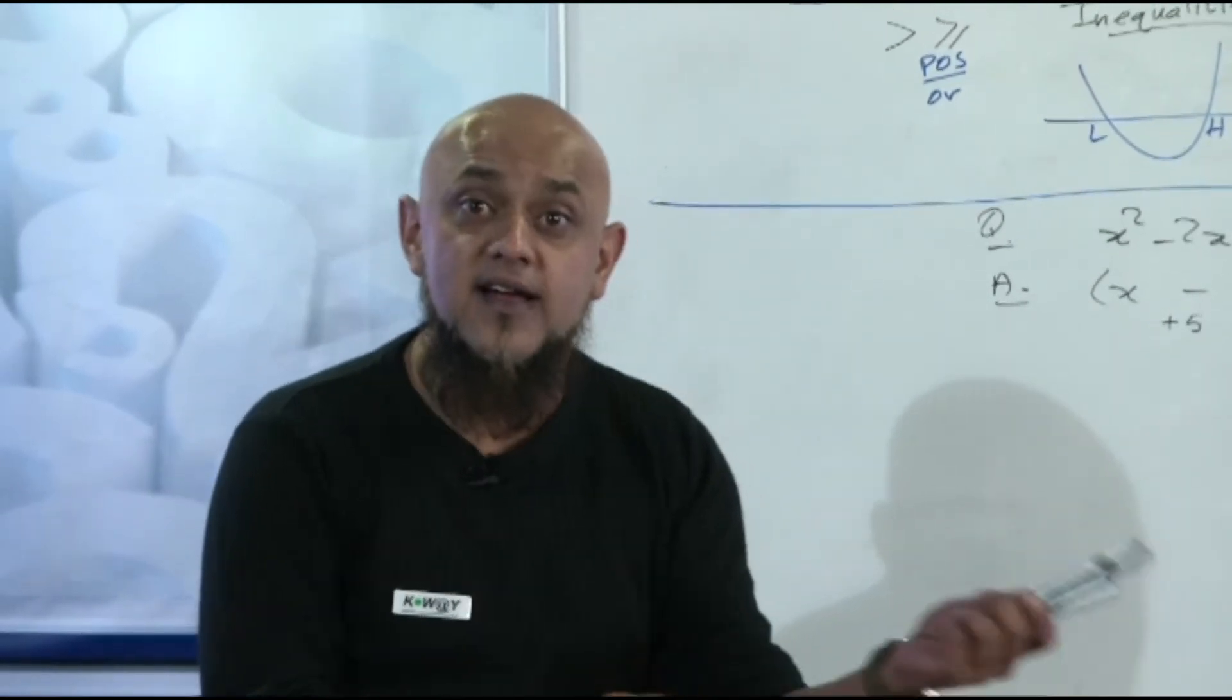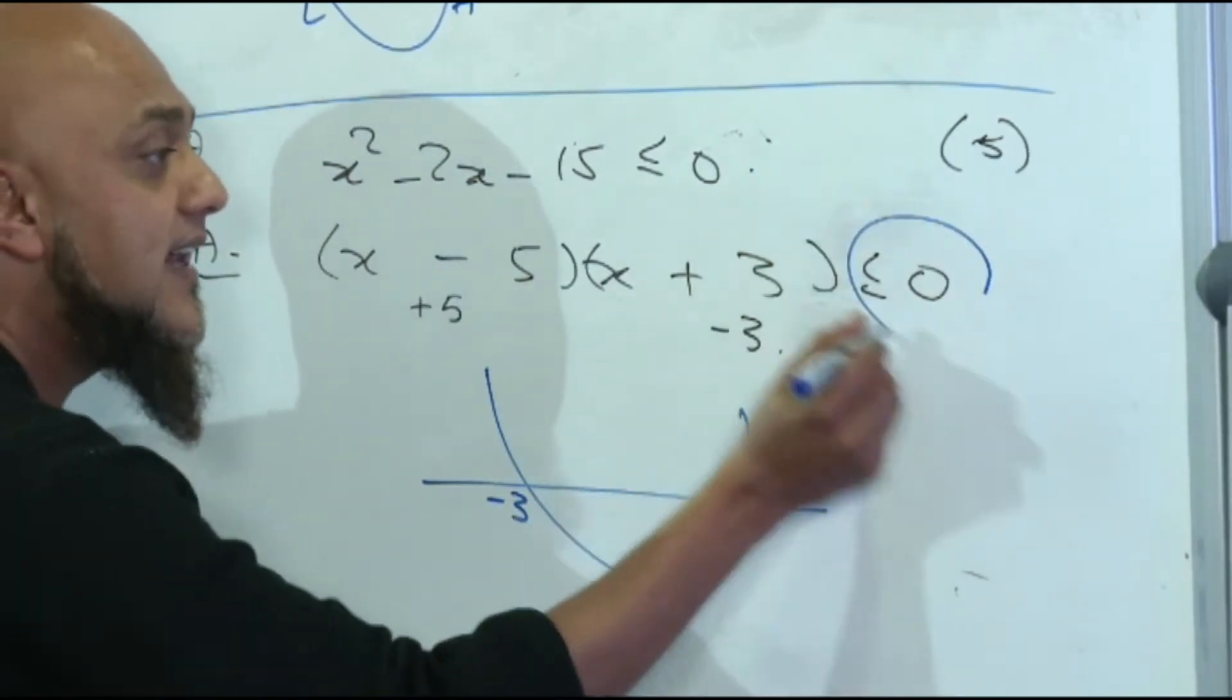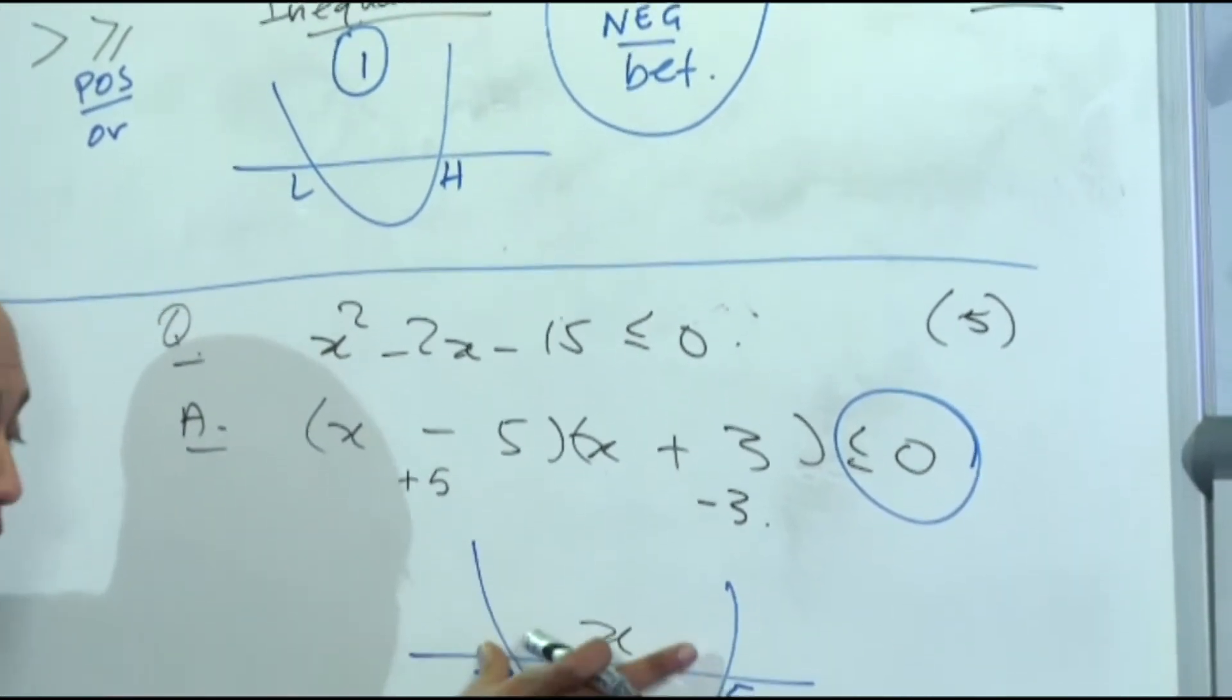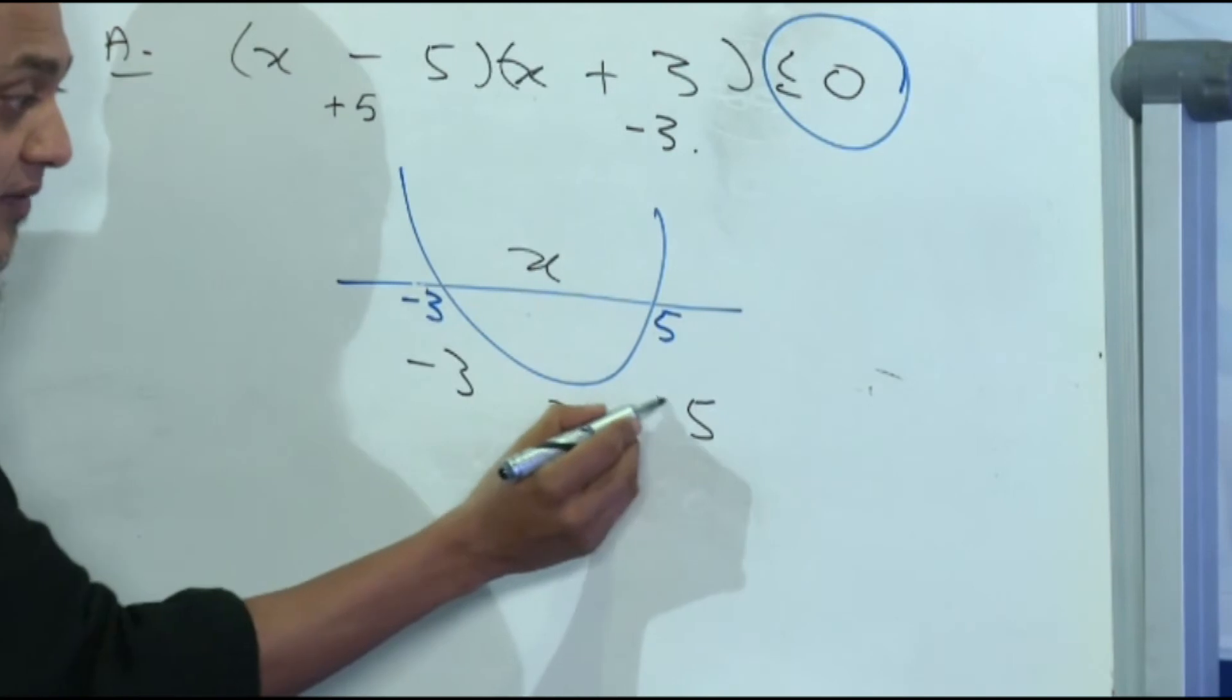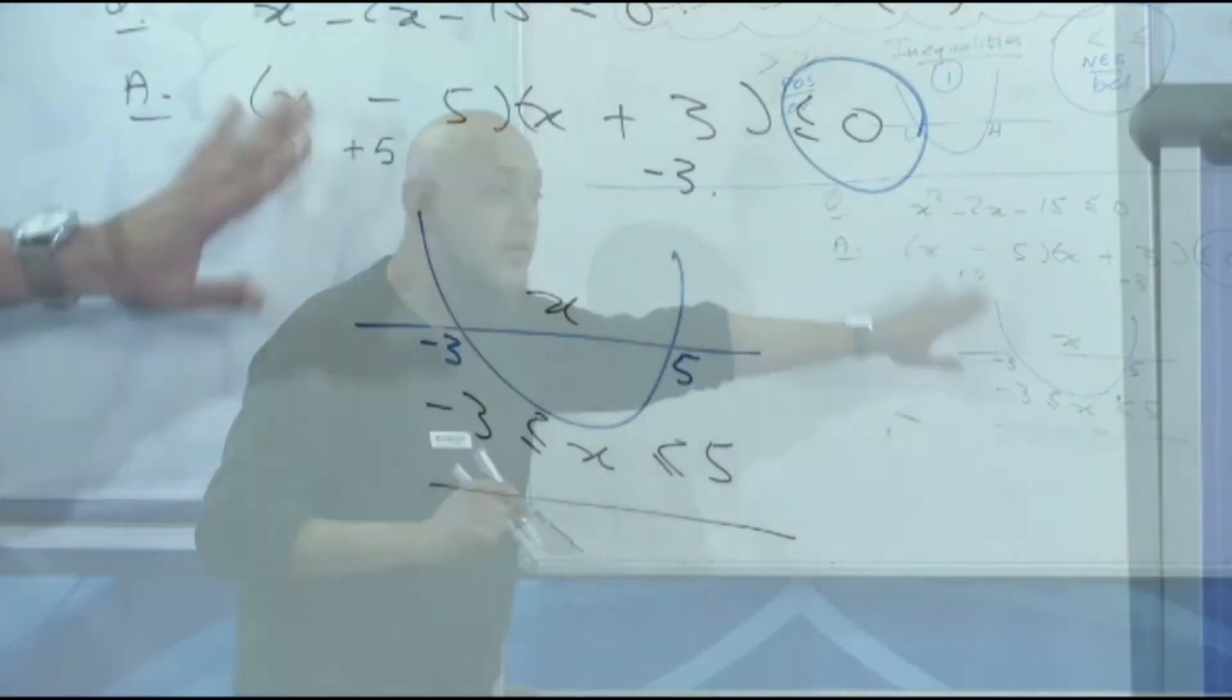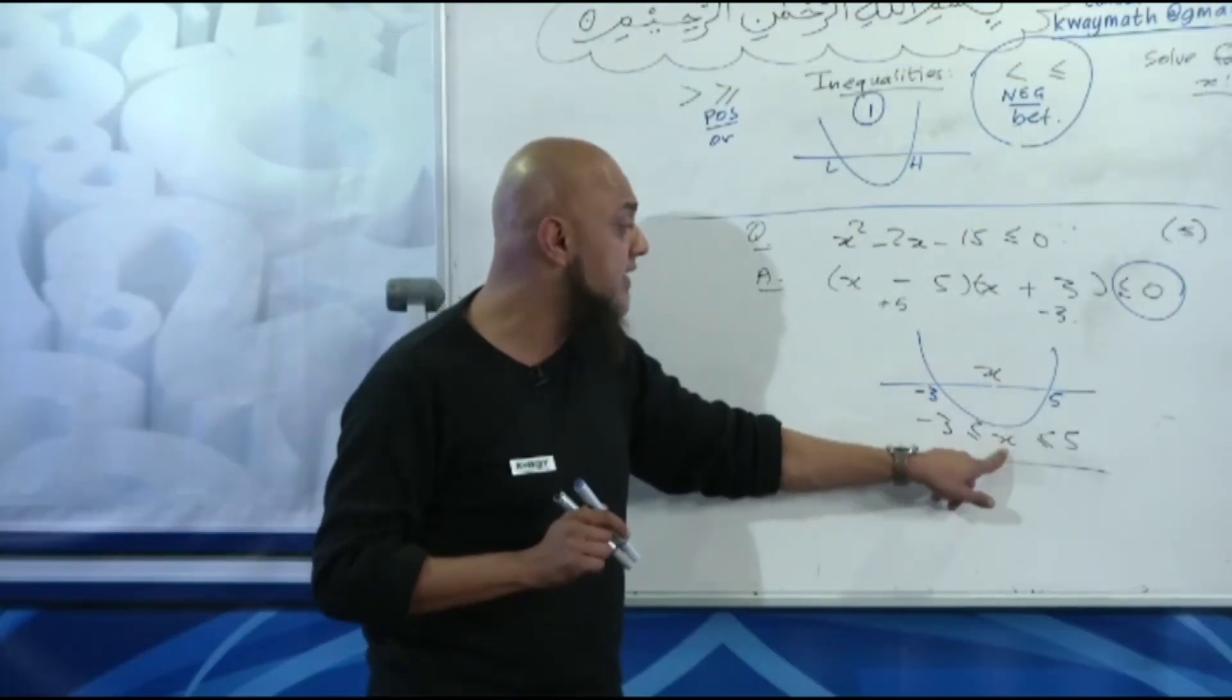Now you cannot say is equal to because it's an inequality. Now you draw the rough parabola. There's your parabola, lower number first, higher number second. It's less than or equal to, so is it positive or negative? Negative. So what's the rule? BET. What does BET stand for? Between. So we just put x between these two points. All you do is copy and paste. There's your inequality. Use the same sign: less than or equal to, less than or equal to. That's your final answer. You'll get yourself five to six marks in the exam. Simple, straightforward. Because it's negative, you put x between. That's the rule: NEG BET.